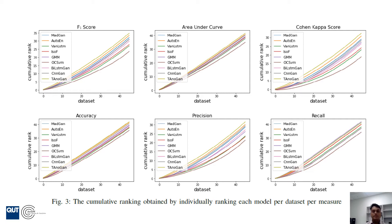We can see that for all measures except recall, TANUGAN performs better than other models. For recall, Gaussian Mixture Model gives marginally better results than our TANUGAN model. However, when we look at precision, our TANUGAN model gives significantly better precision than Gaussian Mixture Model. This means Gaussian Mixture Model produces a lot of false positives. Higher recall is desirable in anomaly detection, but false positives increase monitoring cost. We need a model with both higher precision and recall, not just higher recall. Higher precision and recall together are indicated by a high F1 score, and our model TANUGAN gives a high F1 score.